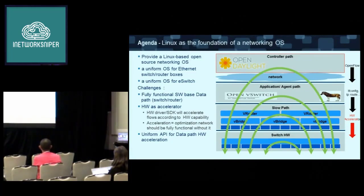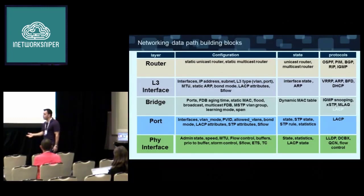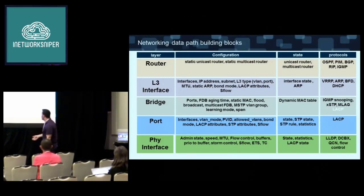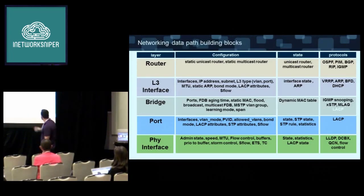In order to do so, let's look at how a network component looks like — these are the basic building blocks. If we look at the physical interface, we have the admin state, MTU, flow control, buffering, quality of service, ETS, sFlow, and all the other attributes. We have state — this port can be up or down — statistics, LACP state of the port for bonding, and protocols working on that layer such as LDP, DCBX, QCN, and flow control.